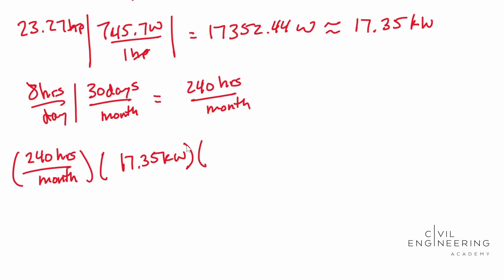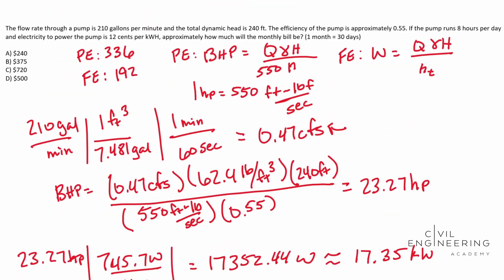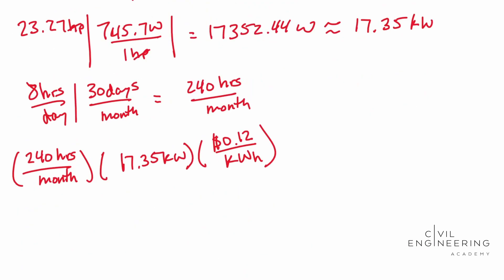And then we need to multiply that by our 12 cents, so 0.12 per kilowatt hour. Remember our problem says kilowatt hour right there. So this is actually a capital H, kilowatt hour. So we see the hours cancels out, we see that kilowatts cancel out, and guess what we're left with. We're left with money over month. And so whenever we solve this out, you end up with $499.68 as your answer.